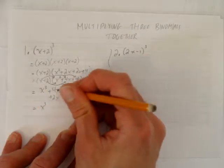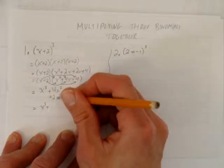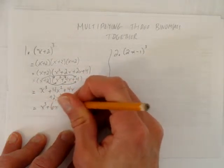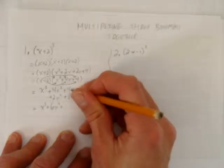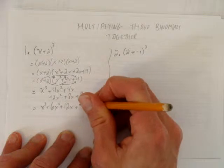I can see the like terms because I stacked them up. x cubed has no like terms, but 4x squared plus 2x squared is 6x squared. 4x plus 8x is 12x. And the 8 has no like terms.